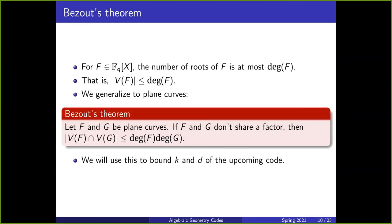Now we're going to look at some codes that we can define based on plane curves. But first, we're going to look at Bezout's theorem, which will help us bound the dimension and the distance of the upcoming codes. For a single-variable polynomial over Fq, the number of roots is at most the degree of f — equivalently, since the roots of f form the set V of f, the size of V of f is at most the degree of f.